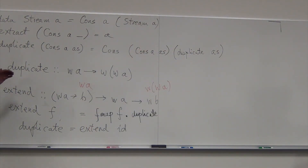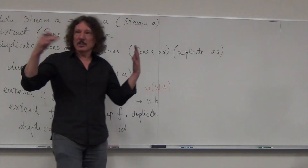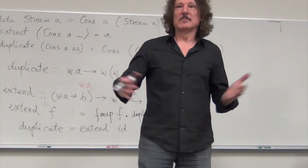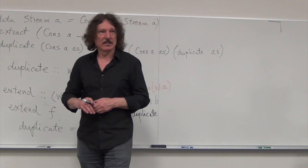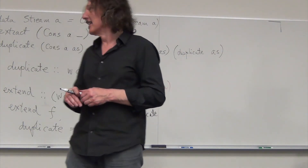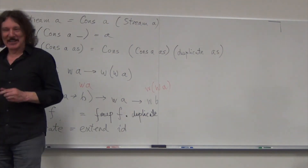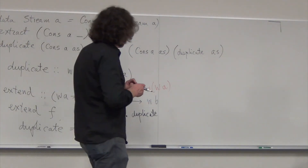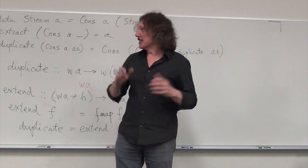So we have both extract and duplicate. We can check the comonadic laws — we usually don't do that because we are too lazy; it's homework. But it's pretty much obvious that it will work by construction.